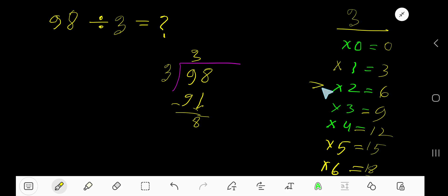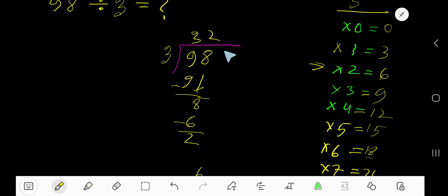3 times 3 is 9, which is greater than 8, so 2 times. Write 2. 2 times 3 is 6, subtract to get 2. So our answer is 32 remainder 2.